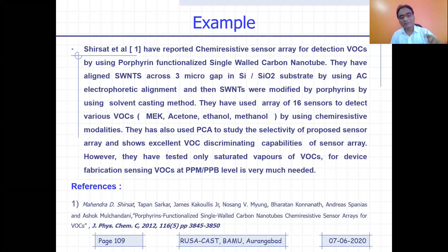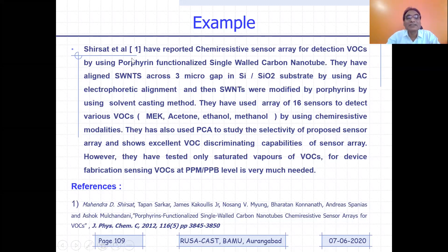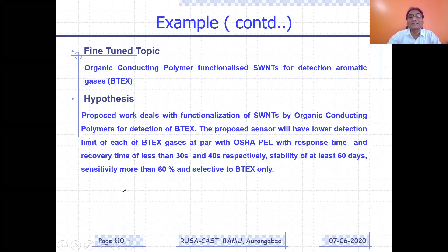And then in the references, you can see: 'Sirsat et al. [1]' — it means I am referring to this paper. In the list of references, this will be my first paper, with the author's name, title of the paper, and the journal's details. This is how it needs to be cited in the references. So this is the national status and then the international status. This is what the literature review is going to be.